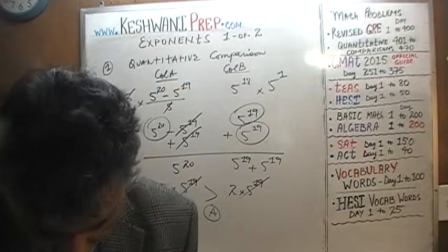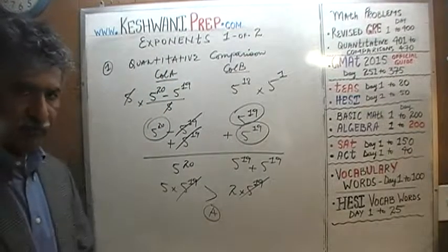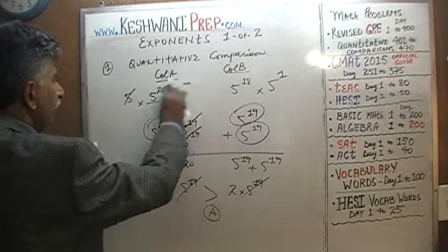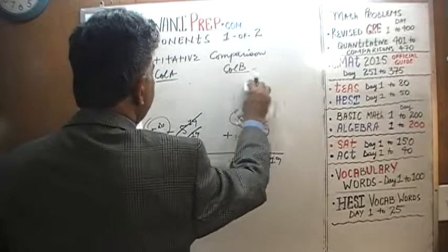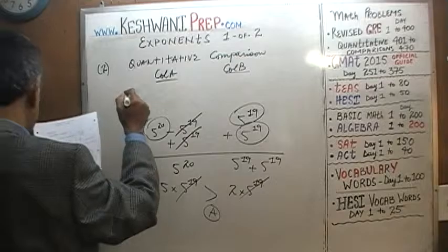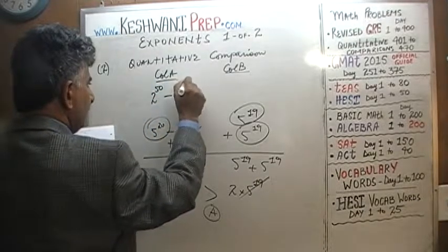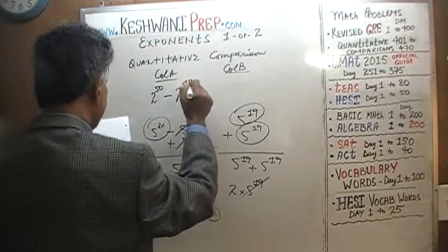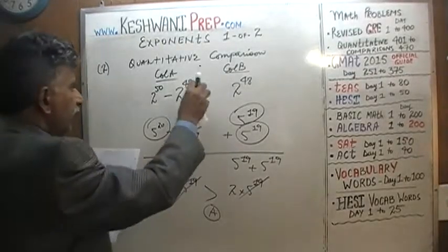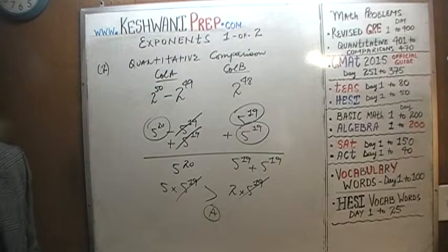The next problem is very similar — same concept, same steps. Question number 2: (2 raised to 50 minus 2 raised to 49) over 2 versus 2 raised to 48. Do it yourself, pause the video.